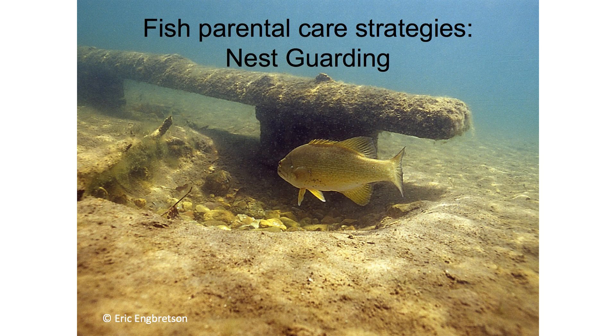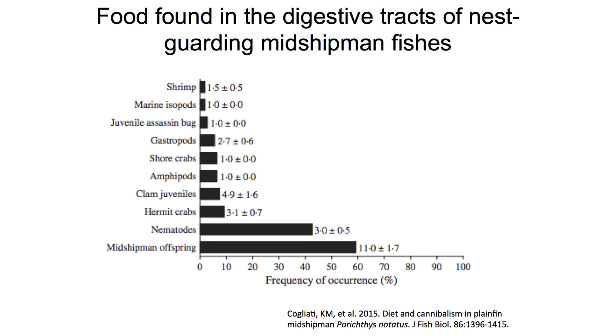First there's nest guarding. The parent fish will guard a bunch of eggs and you might think, oh that's nice, the daddy fish is guarding its eggs and keeping them safe. Well, in reality cannibalism is extremely high among nest guarding fishes. Not exactly a great strategy.